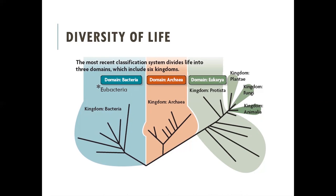Same thing with Archaea — we only have one kingdom. It's not until we get to Eukarya that we see multiple kingdoms: Protista, Plantae, Fungi, and Animalia, all of which have eukaryotic cells. Out of the three domains, Bacteria and Archaea fall underneath prokaryotes. So prokaryotes are really everything that is not a eukaryote in this tree. Going back to our phylogenetics lab, if you look at the root of the tree, the first cells were prokaryotes — very tiny, with no membrane-bound organelles and no central nucleus.